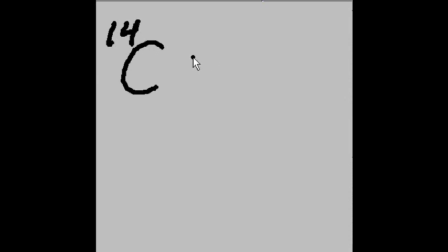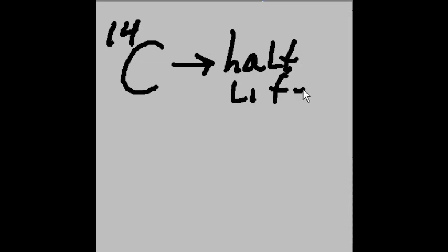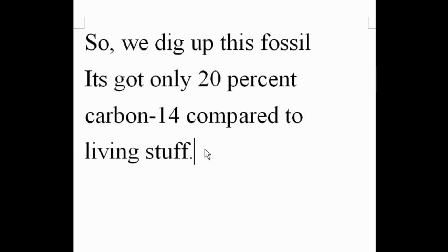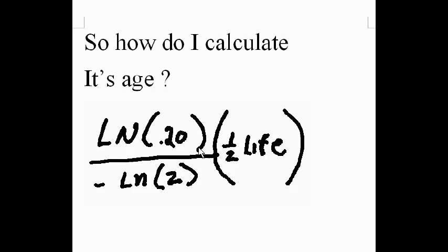We know that the half-life of carbon-14 is 5,770 years, plus or minus 40 years. So let's do an example. We dig up this fossil — it's got only 20% of the carbon-14 compared to living stuff. So how do I calculate its age?